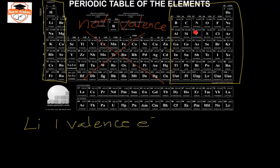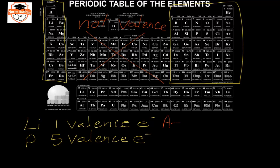If we look at phosphorus, it is on the third period of the periodic table. Counting across — one, two, three, four, five — phosphorus has five valence electrons, skipping all the squares in the central part. Likewise, arsenic is in the same row position and counting across gives five, so arsenic also has five valence electrons.